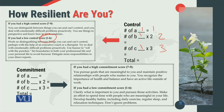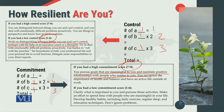Aur is category mein uske interpretation yeh hai ke work on distinguishing between things that you can and cannot control, perhaps with the help of an executive coach or therapist. Ishi tarha, hum commitment ko fill karayenge — commitment mein suppose if we have got 1 A, 1 C and 2 B's, so that would make 1, 4 and 3, some total equal to 7. So 7 ke case mein, you pursue goals that are meaningful to you and maintain positive relationships with people who matter to you. You recognize the importance of health and balance and have an active life outside of work.